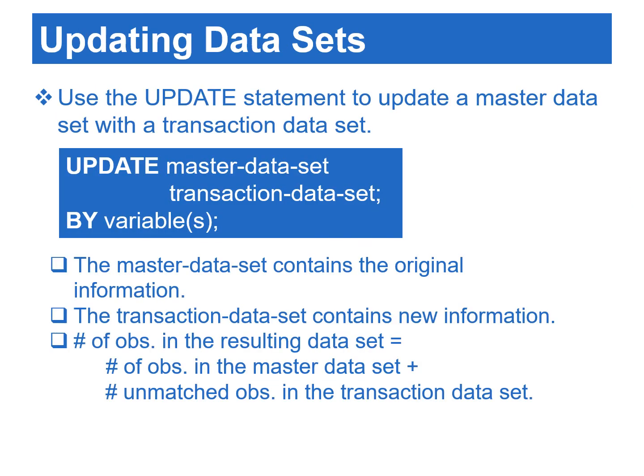The last method to combine data sets horizontally is to use the update statement. We can use the update statement to update a master data set with a transaction data set. The master data set contains the original information, while the transaction data set contains newly collected information. The update statement uses observations from the transaction data set to change the values of matched observations in the master data set. The number of observations in the resulting data set is the sum of the observations in the master data set and the number of unmatched observations in the transaction data set.